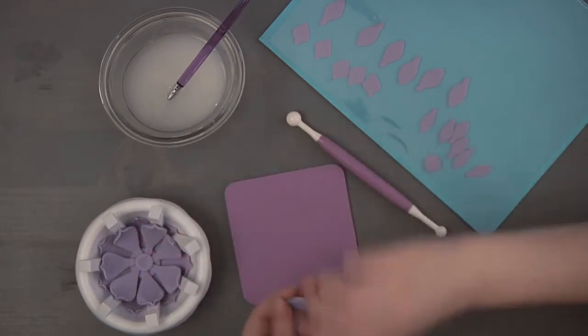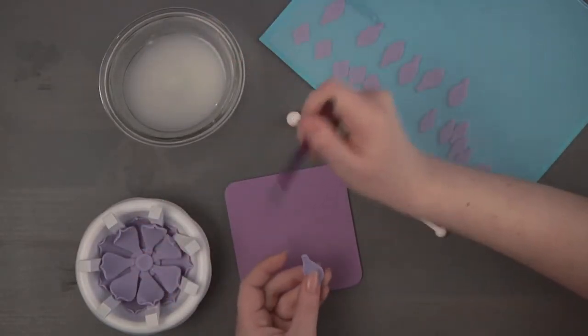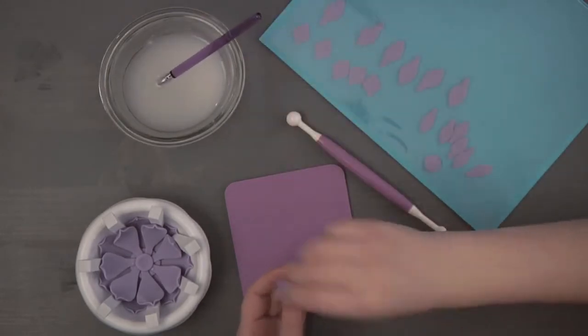Repeat that same process with the 7 size C leaves, again positioning them between the leaves of your previous row.